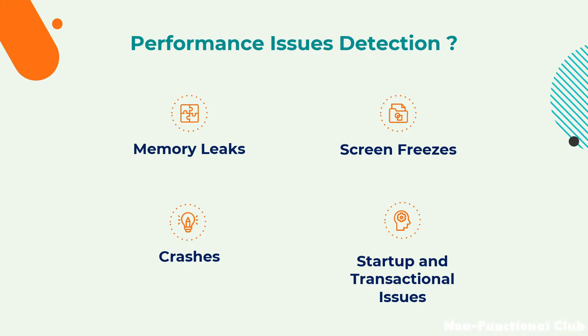Next would be startup and transactional issues — how the app behaves at launch time and what the transactional issues are. The frames per second rate for the application should also be considered when dealing with the app's flow. These are the major aspects to consider for performance issue detection, and they should be noted and fixed so that our application is properly optimized going forward.